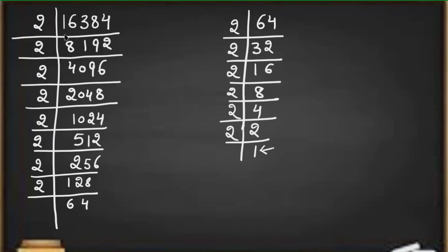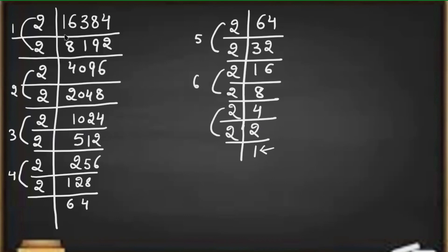After this we have to make pairs of the same number. For example, if we have 2 and 2, we make a pair. If it is 3 and 3, we make a pair of that. If it is 5 and 5, we make a pair of that — the same number must be paired together. So here we make the first pair, second pair, third pair, fourth pair, fifth pair, sixth pair, and seventh pair.